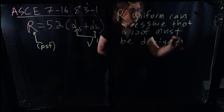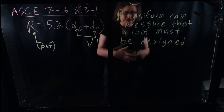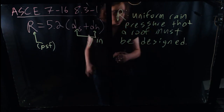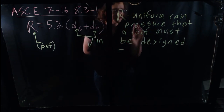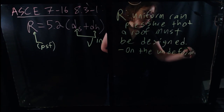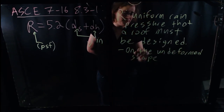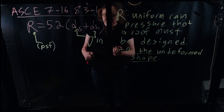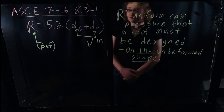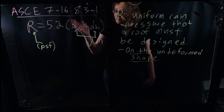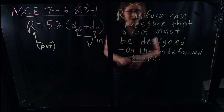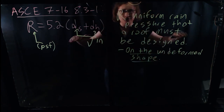Once you have this uniform pressure, you can apply tributary areas, find loads on beams, find loads on columns, and all the other things we've already talked about in this course. A few details: first, this is based on the undeformed shape — which will be important in our next conversation about ponding. These are calculated based on the undeformed shape. You look at the initial design of your roof and calculate DS based on the roof geometry, DH based on the hydraulic calculations, and then based on that, you'll get an R pressure that you apply uniformly over the entire roof.